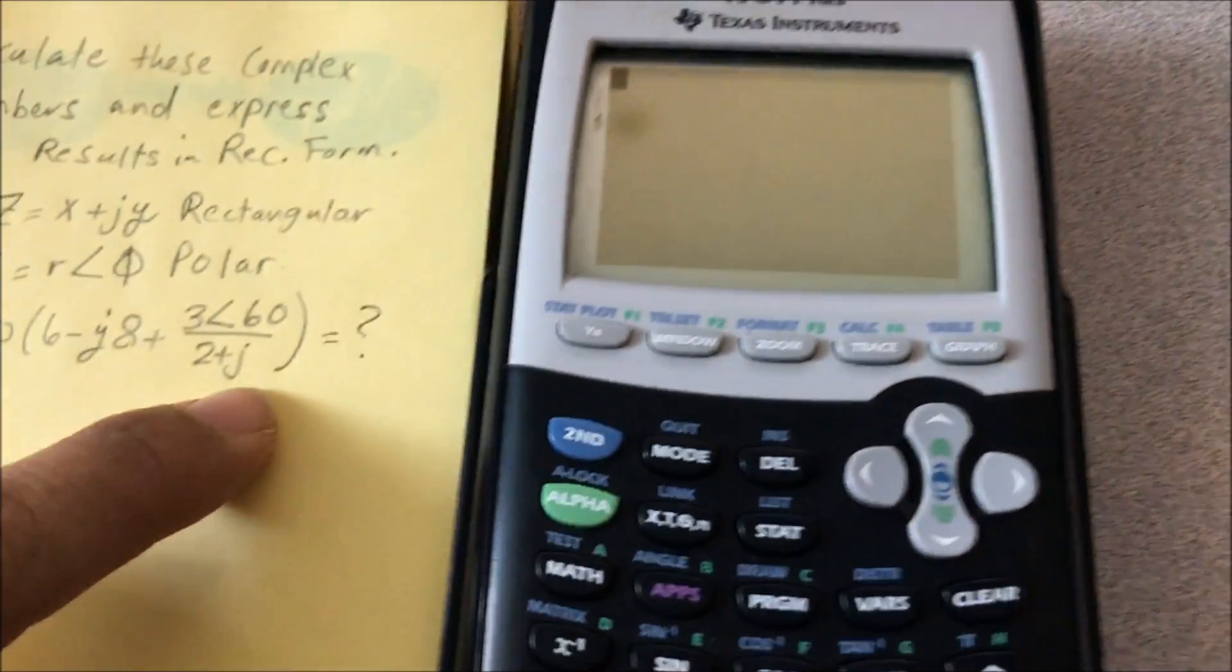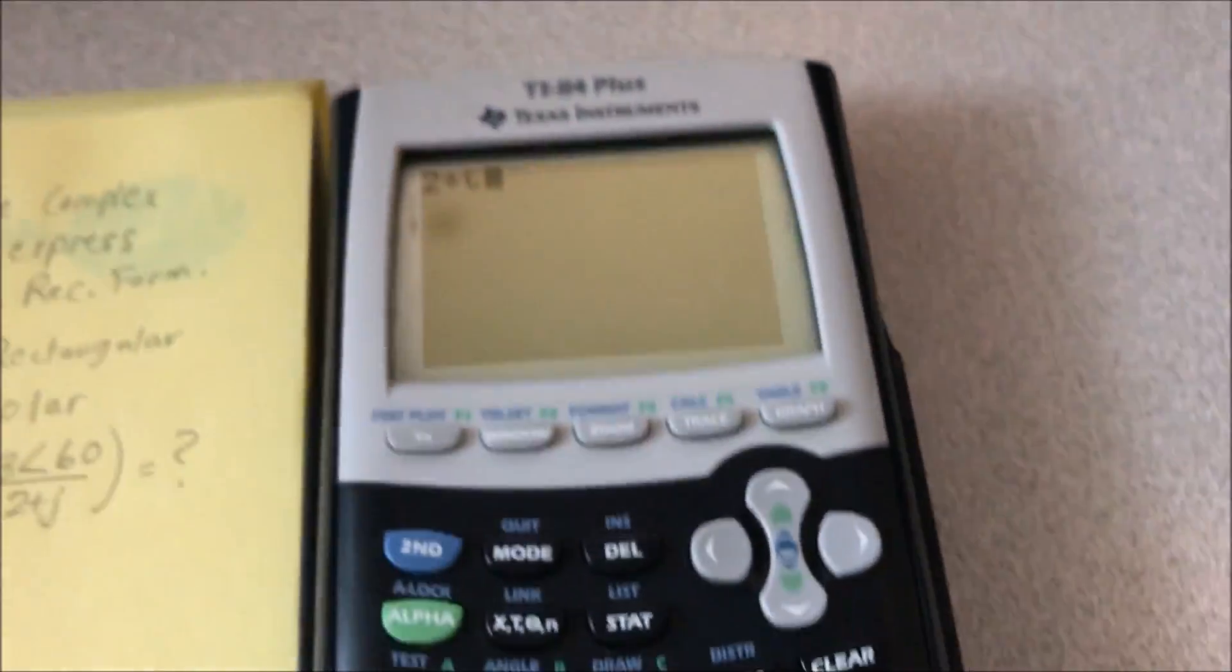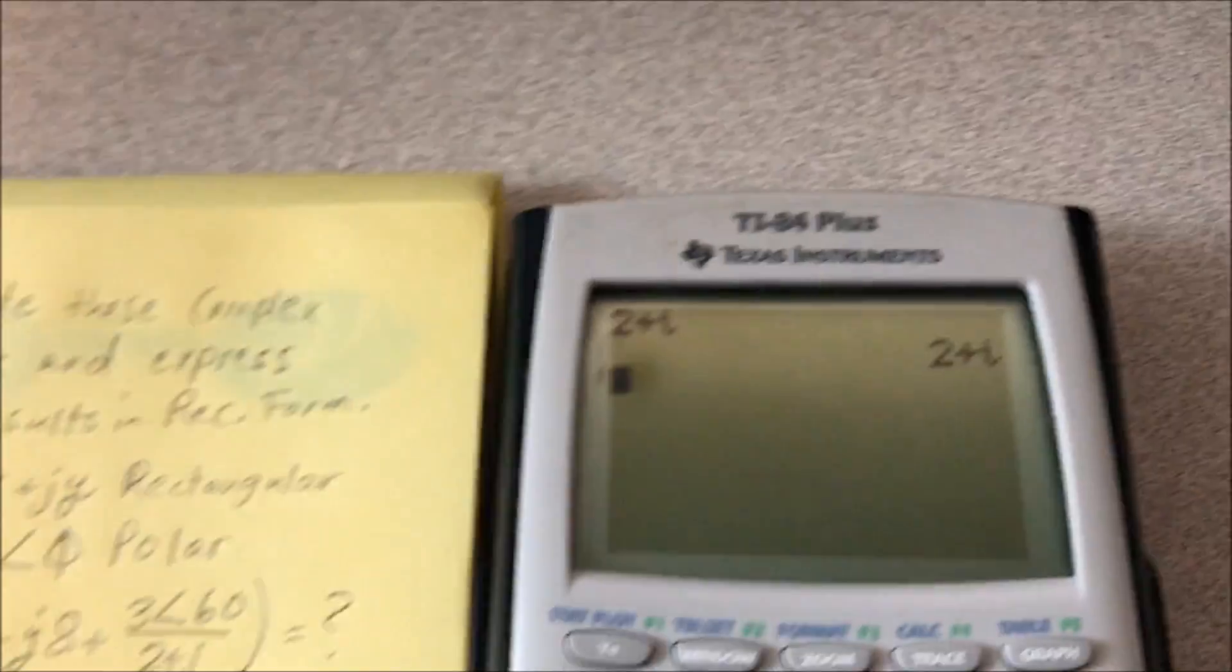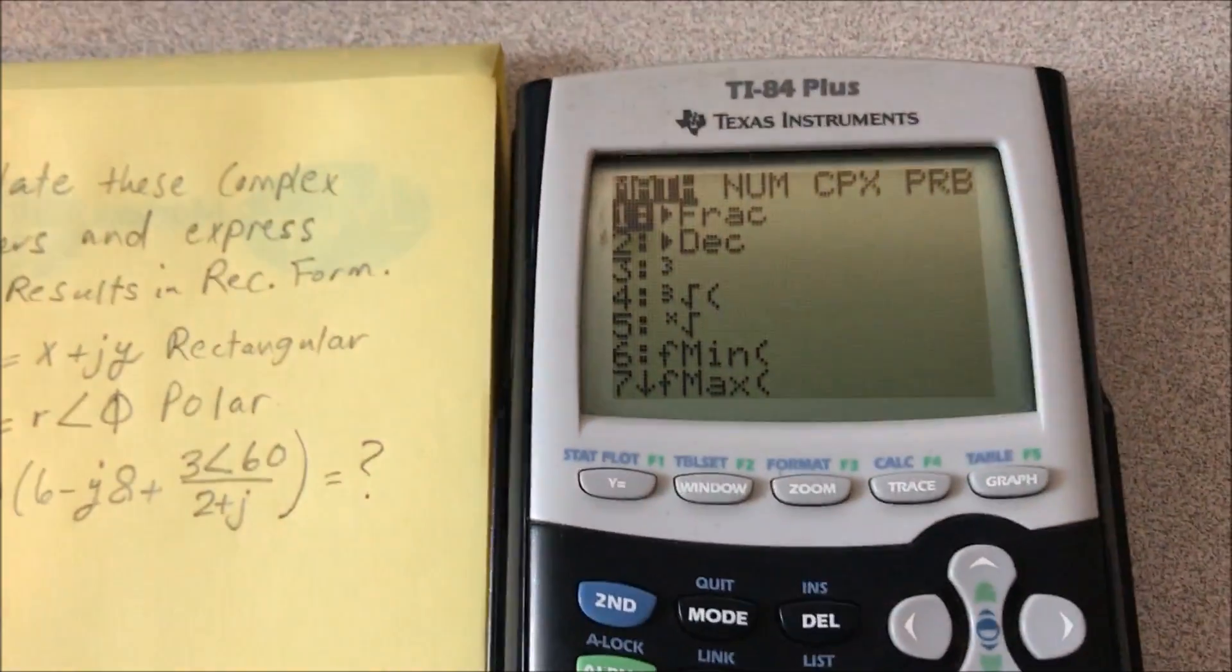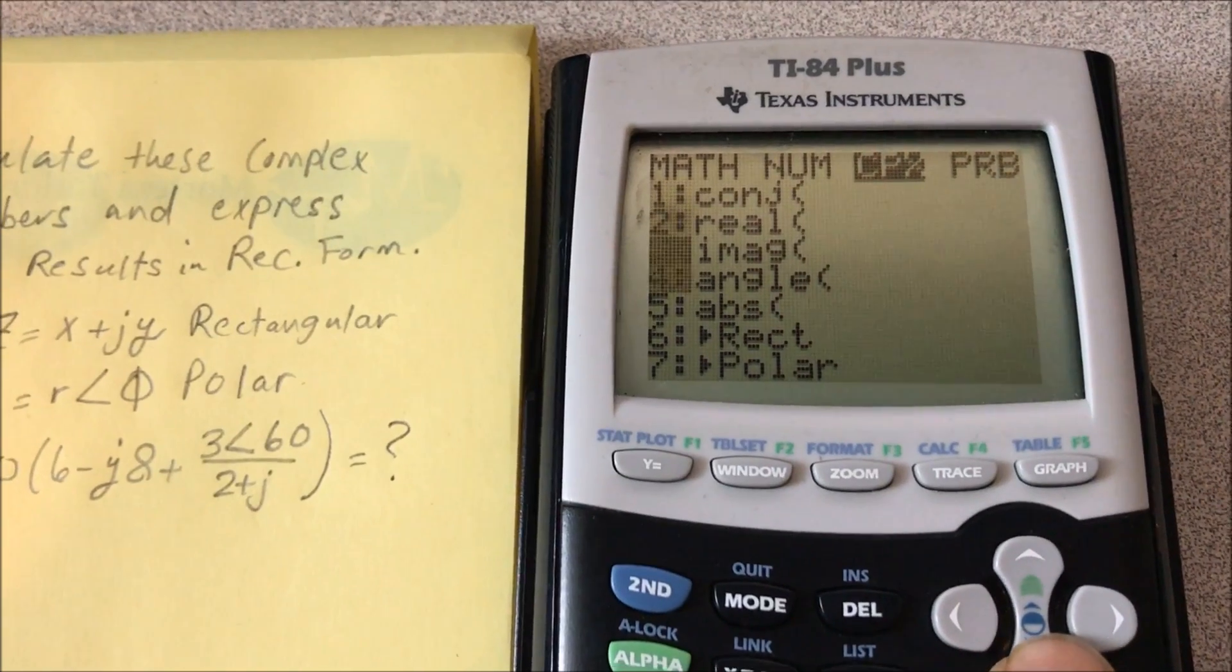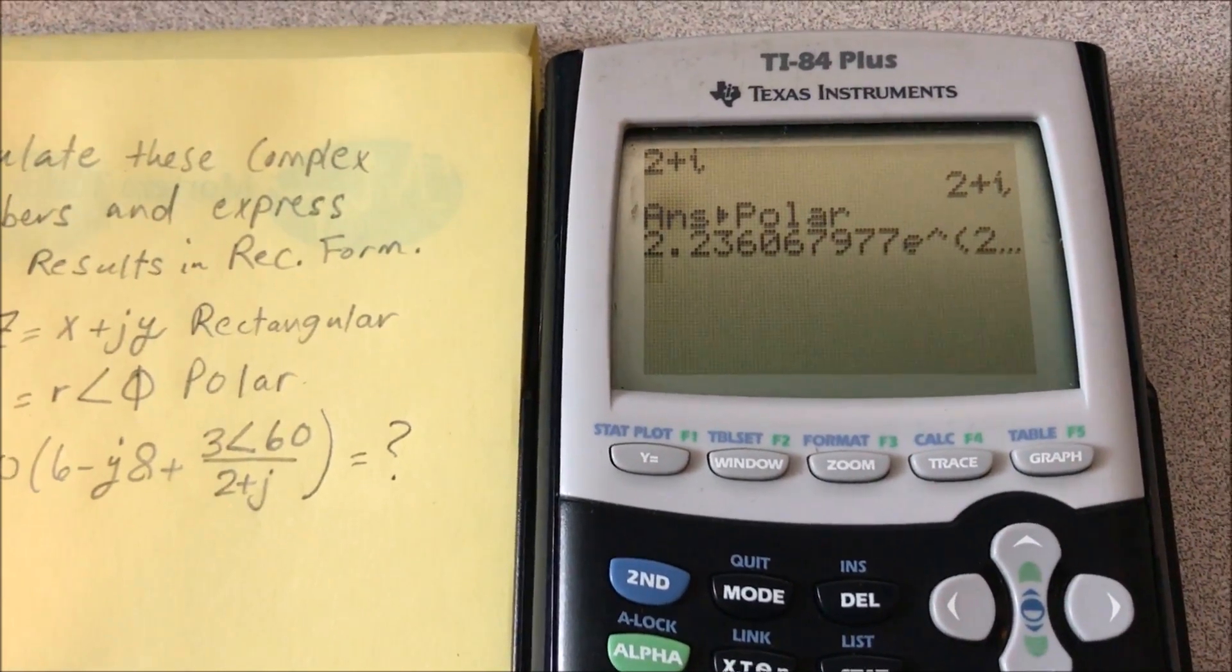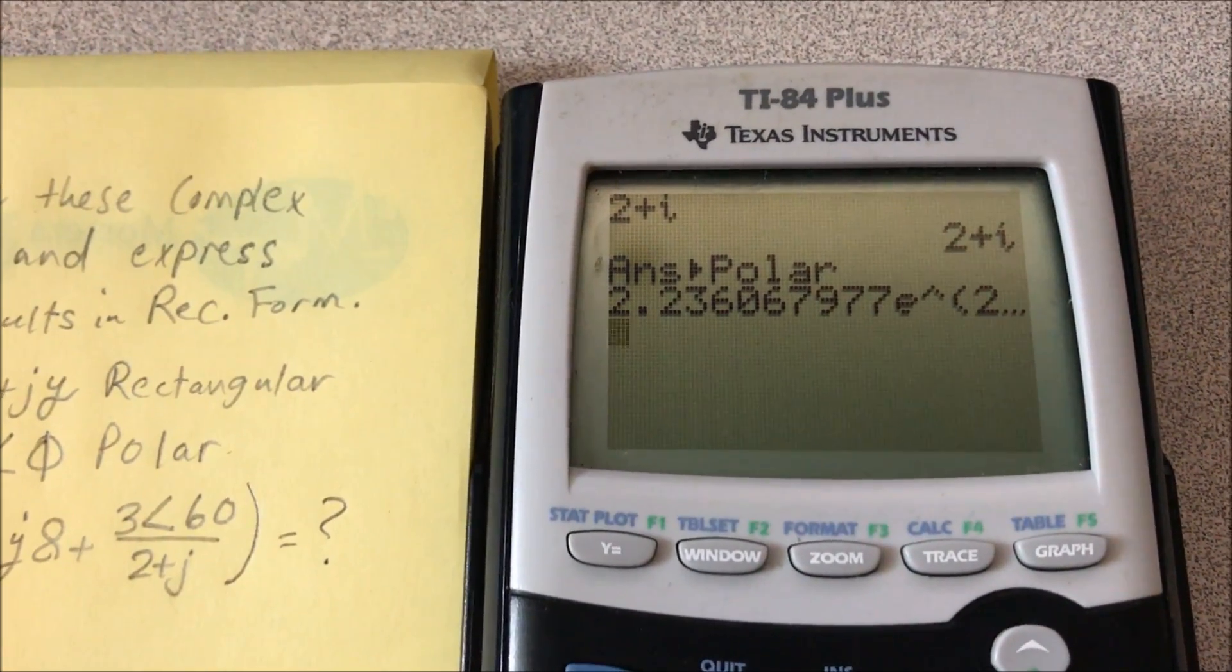So on the calculator, to input 2 plus j, you're just going to put 2 plus second, then the i. 2 plus j, enter. And you're going to click on math, scroll over to complex CPX, and number seven. So 2.236...